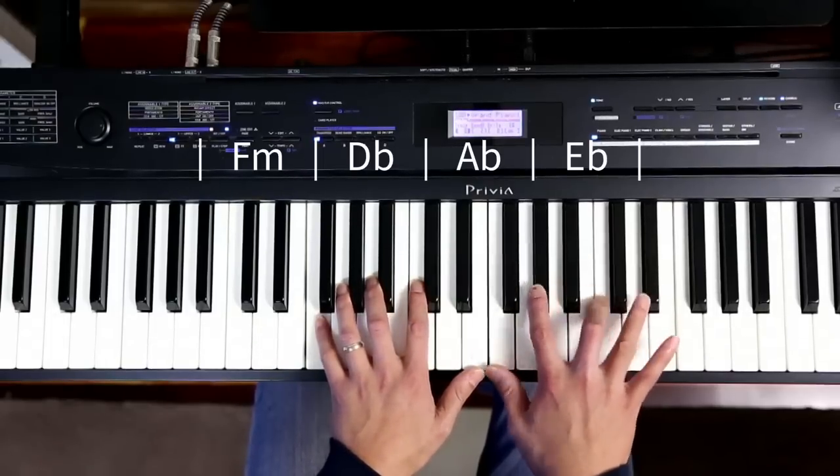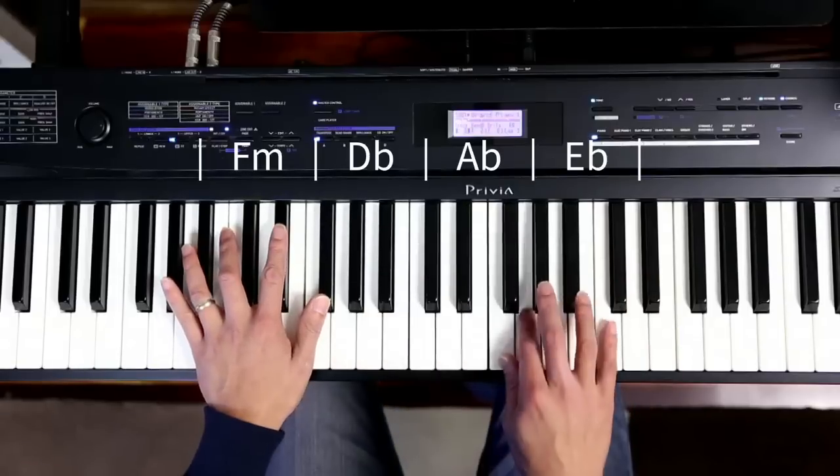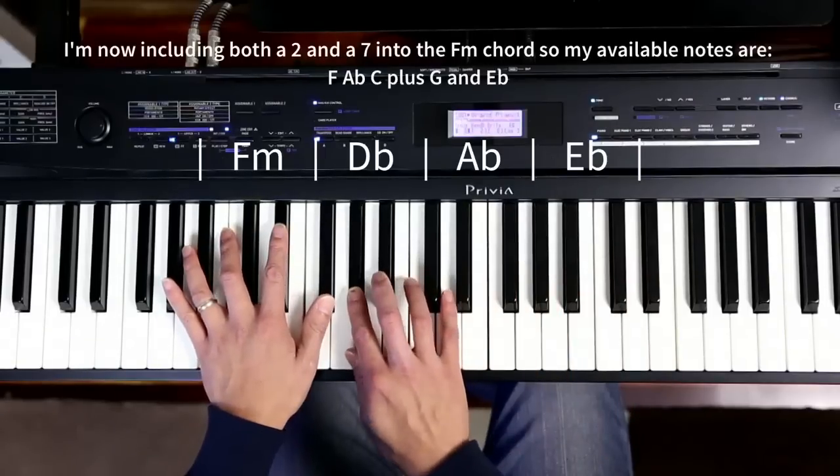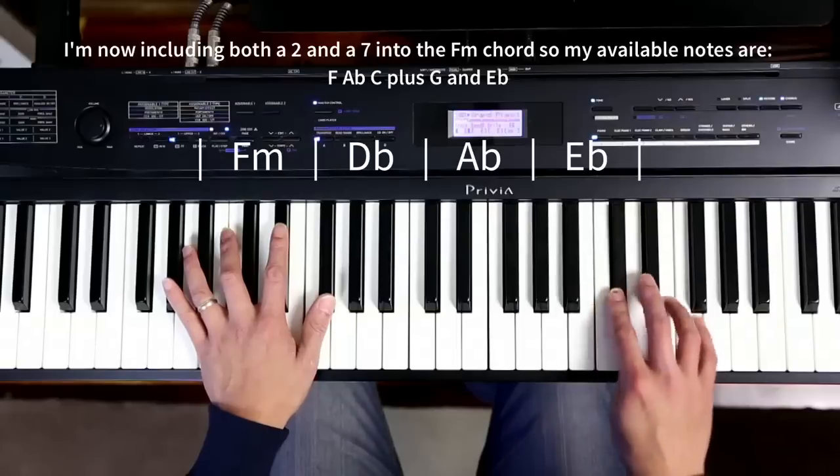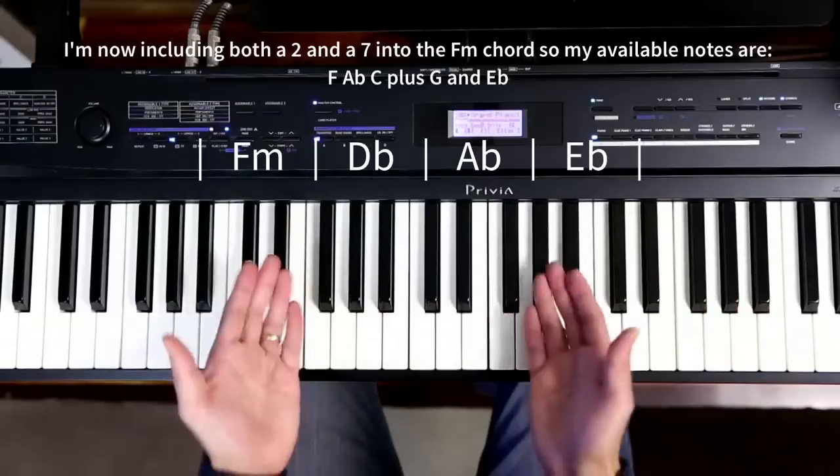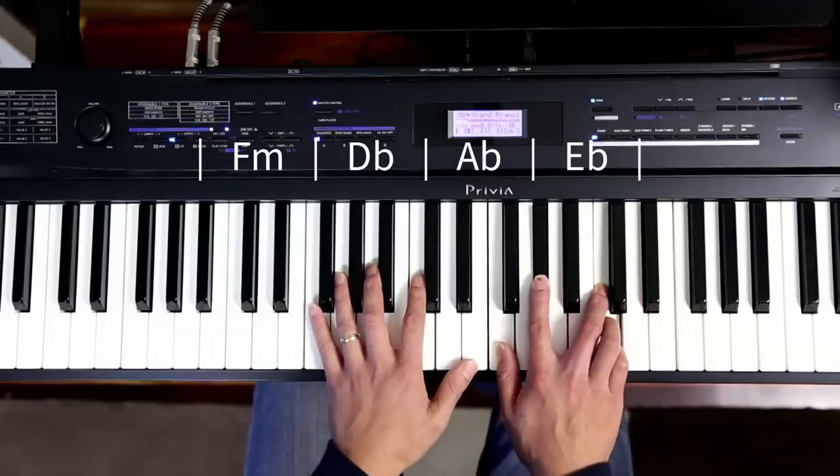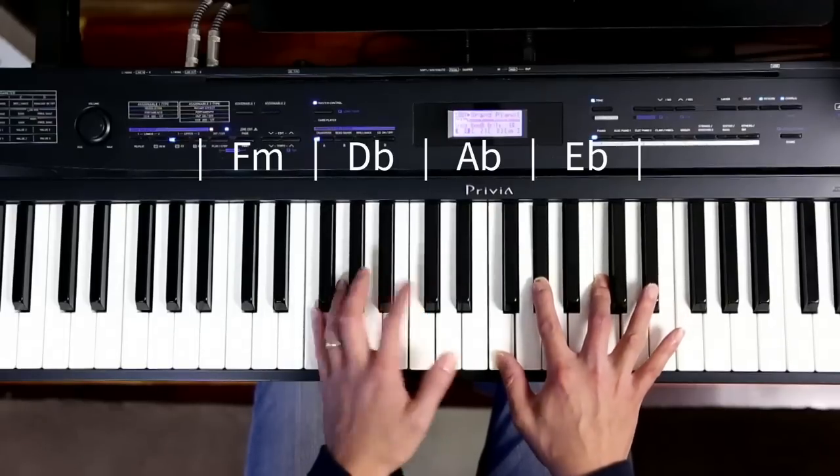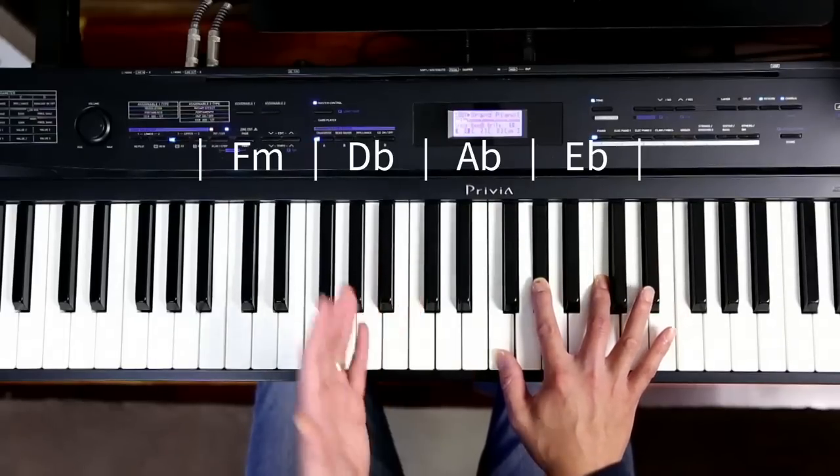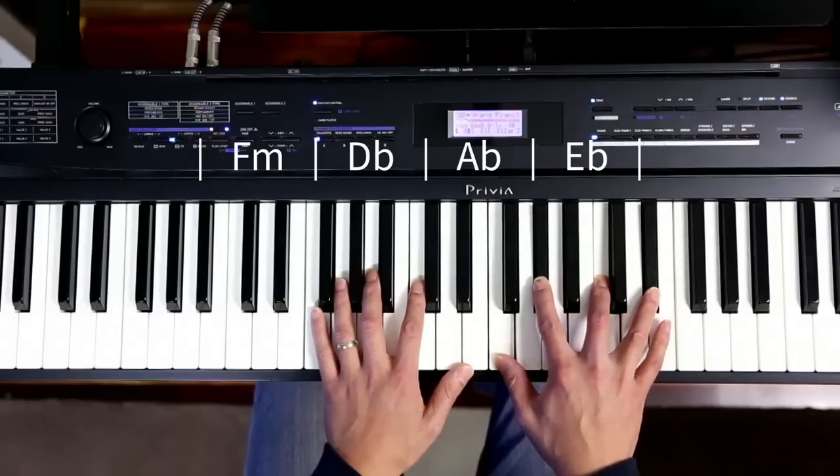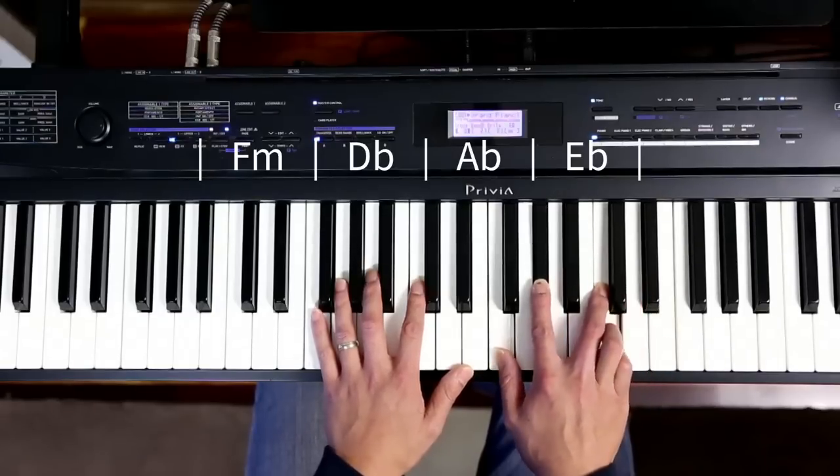But it's because these notes have to come from the scale of A flat. So if you haven't worked that out yet, now's the time for that to really sink in. I can only play notes from that scale. So if I want to add a note to my F minor chord to make it sound a little bit more interesting, I can only choose notes from the A flat scale, the scale that I'm currently playing in. So it's got to be E flat. I can't put an E in there. It's not part of my scale.